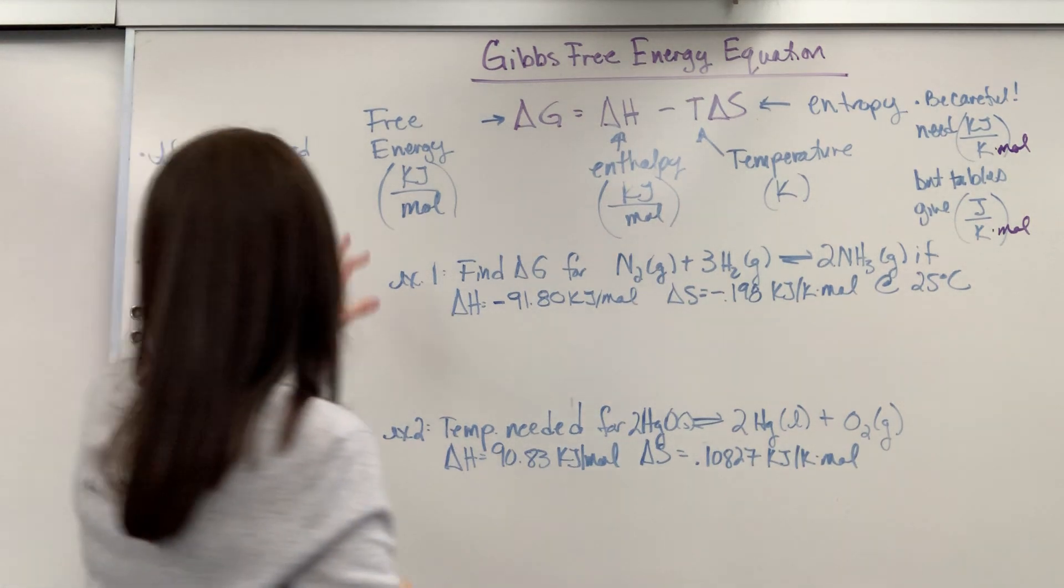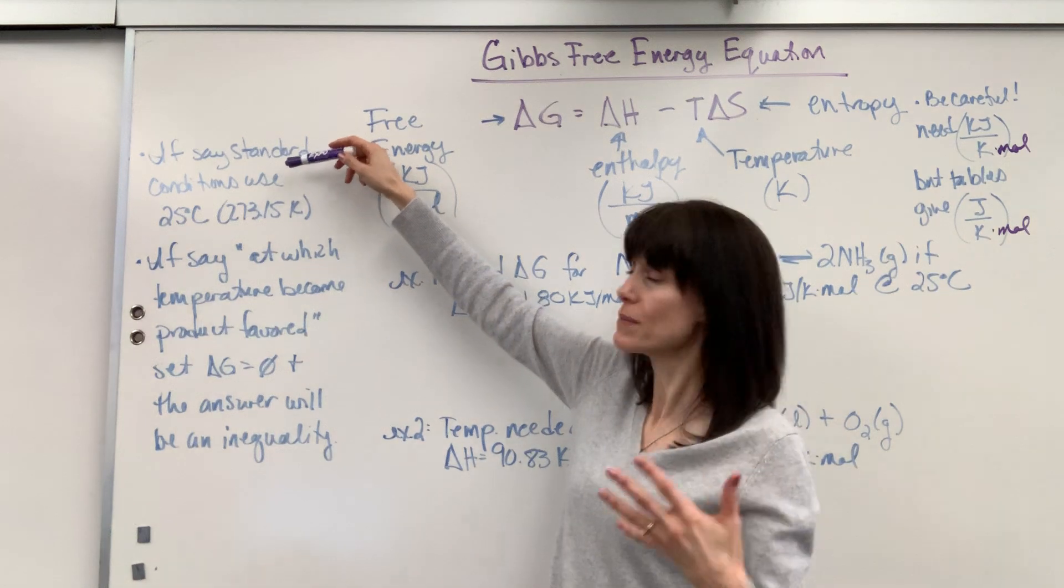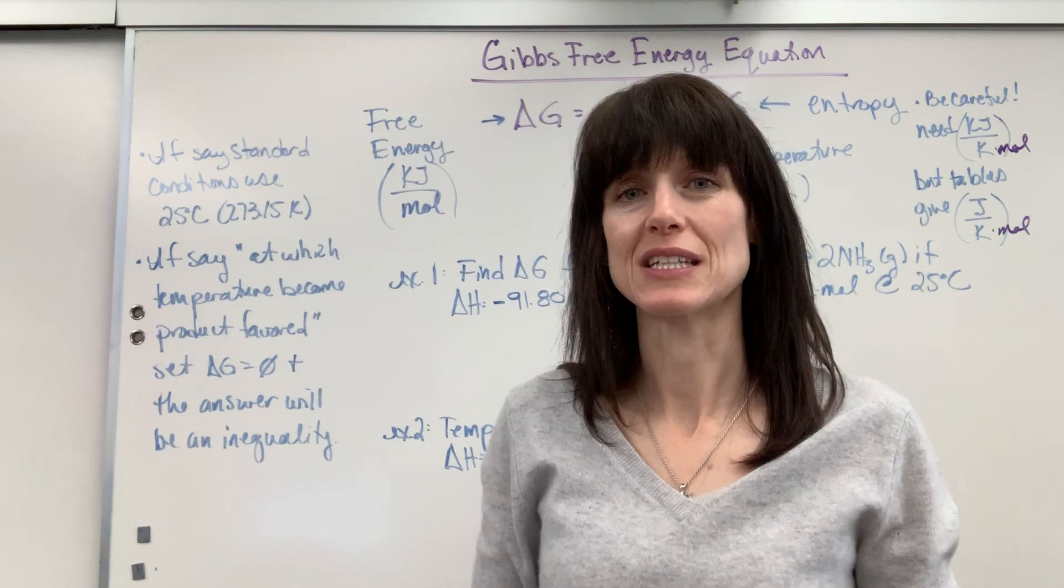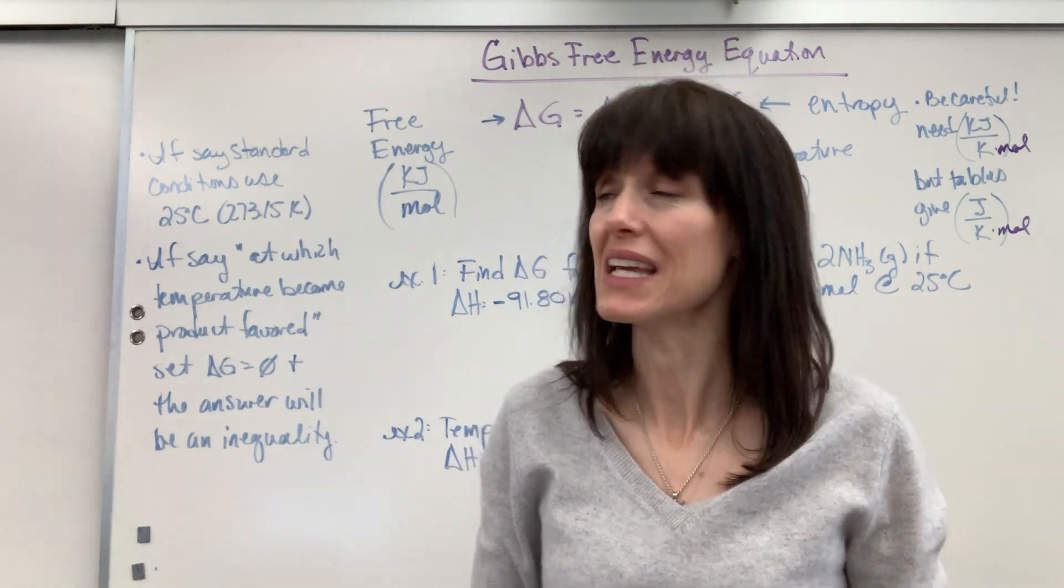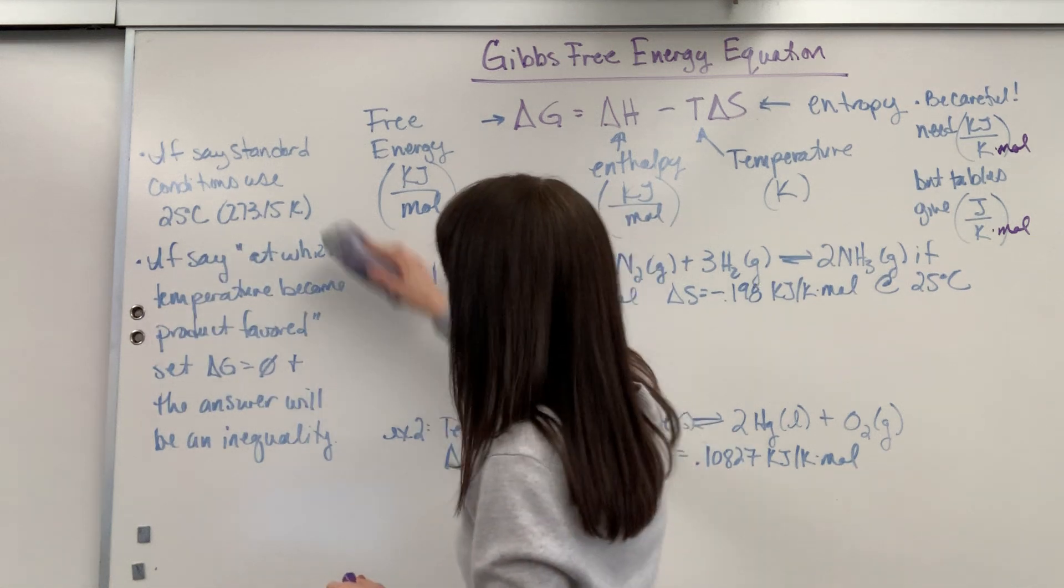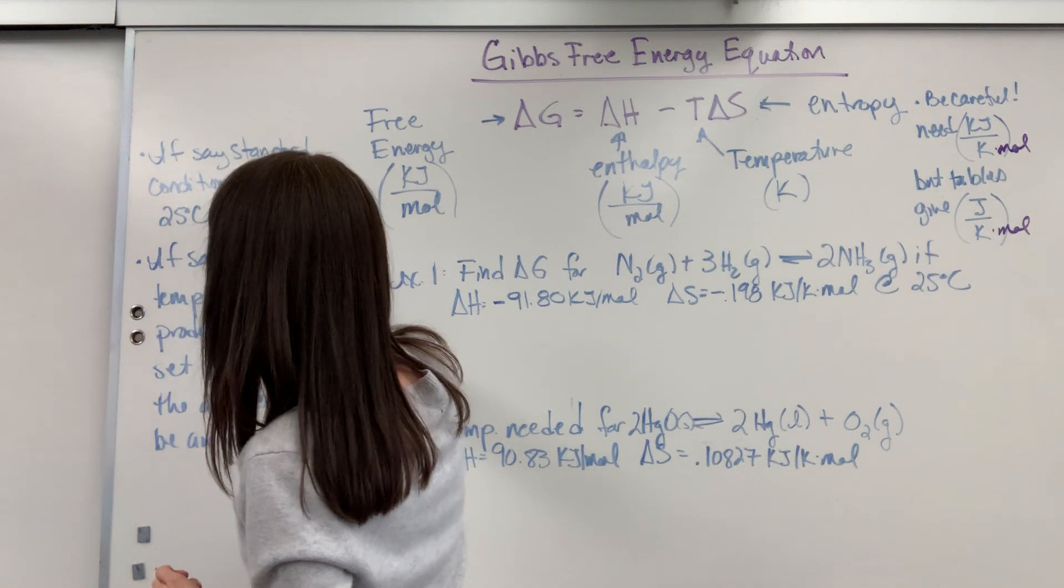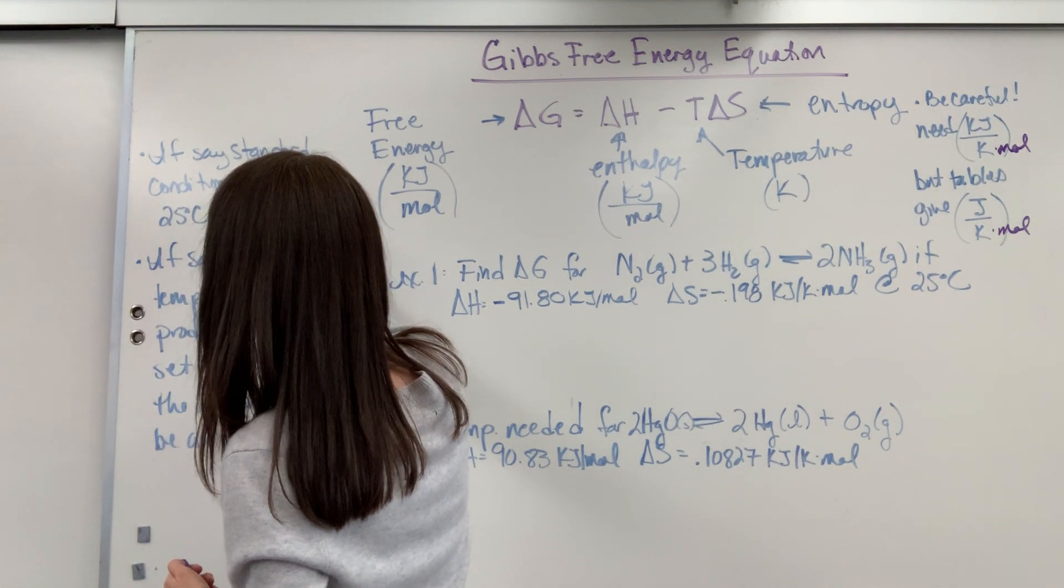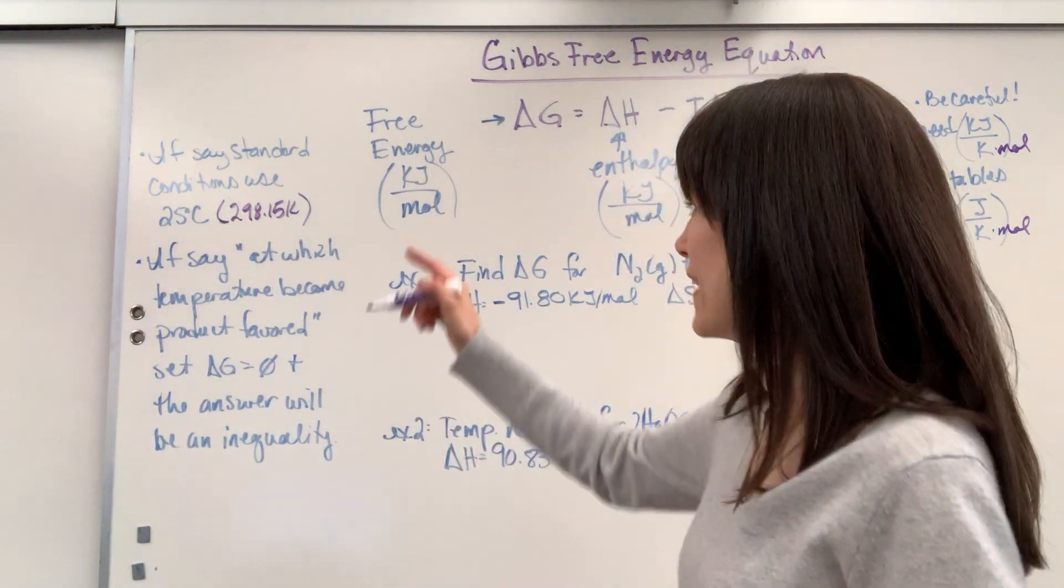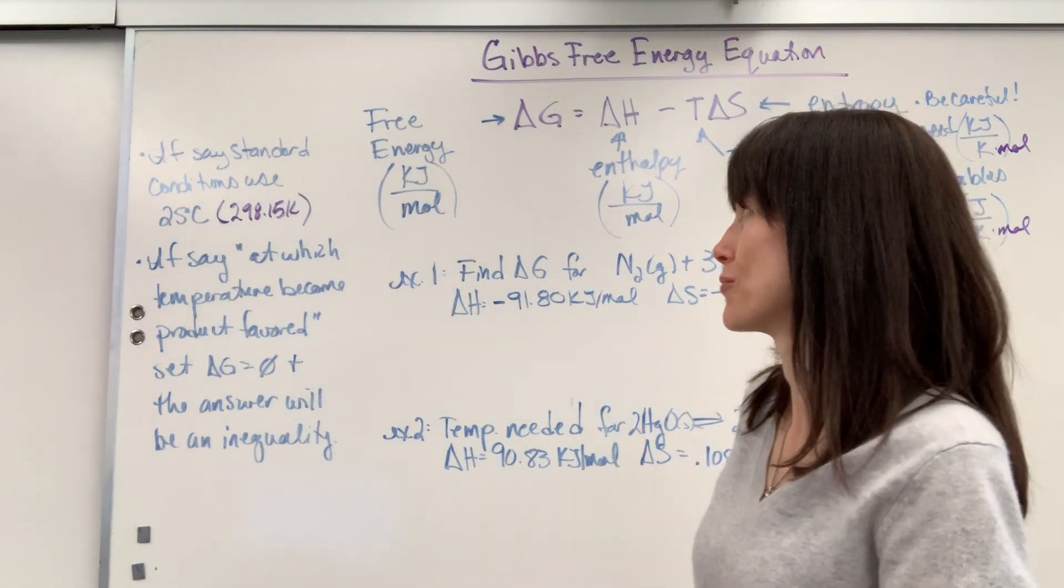Okay, so I have a couple of notes to watch for. If the problem says that they're at standard conditions, just them saying standard conditions, they expect you to know that that's 25 degrees C, that the temperature will be 298.15 Kelvin. So if they say at standard conditions, you automatically put in that 298.15 Kelvin, 25 plus 273.15.